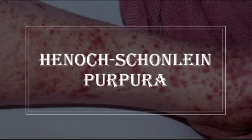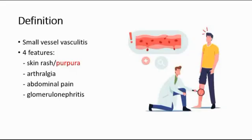Today in this video, I'm going to be talking about Henoch-Schönlein purpura. Henoch-Schönlein purpura, also known as IgA vasculitis, is a disorder that causes the small blood vessels in your skin, your joints, your intestine and kidney to become inflamed and bleed.